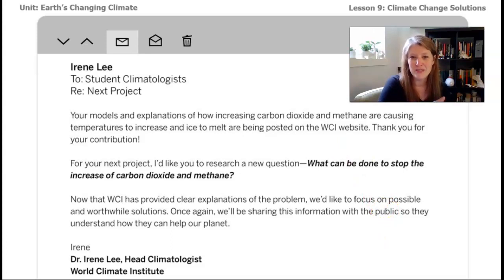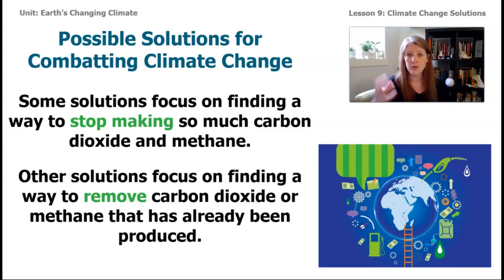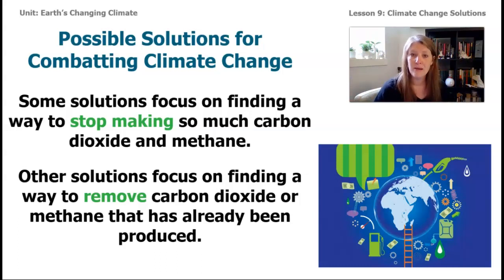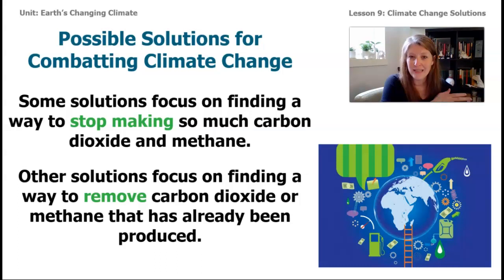The possible solutions we're researching today fall into two main categories. Some solutions focus on finding a way to stop making carbon dioxide and methane — there's too much we're producing, so how can we reduce how much we're making? Other solutions actually find a way to pull carbon dioxide and methane out of the atmosphere. Because when CO2 and methane levels increase, the amount of energy able to exit Earth's system decreases, which raises temperature and makes ice melt. We need to figure out how to break this chain.